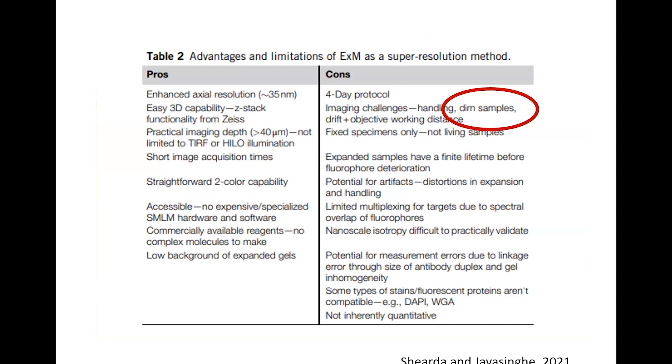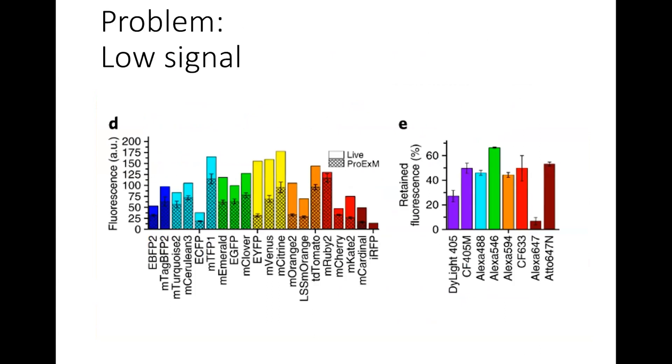So one of the major cons is very dim samples. One of the issues is low signal. This is created by the process as well as all the fluorophores physically moving apart in all three directions. In this example, they go through a variety of fluorescent proteins and fluorescent dyes, and from there, do a comparison of live versus measuring that same fluorescent intensity. Some proteins like YFP do not do well after the expansion microscopy process. Some do much better, like mRuby2. And the fluorescent dyes, Alexa 647 does very poorly, but Atto 647 does fairly well after expansion microscopy.